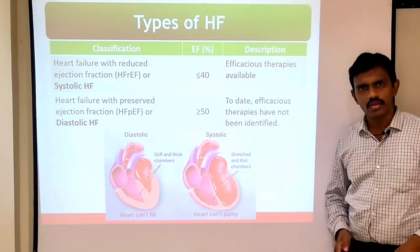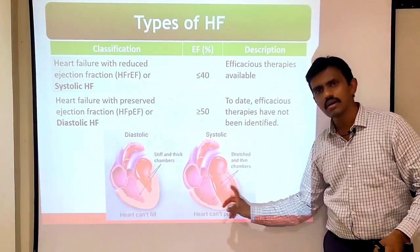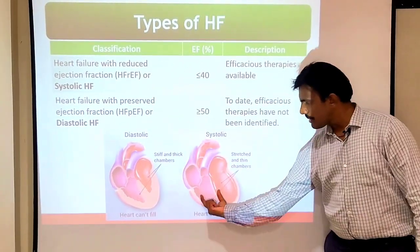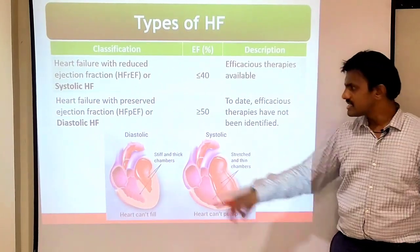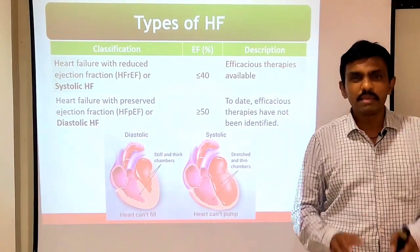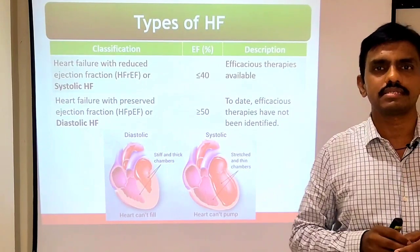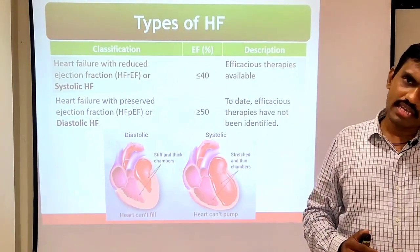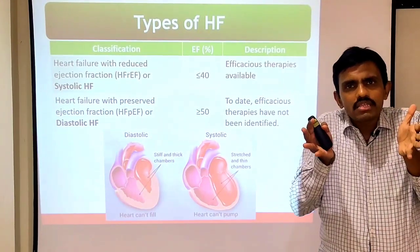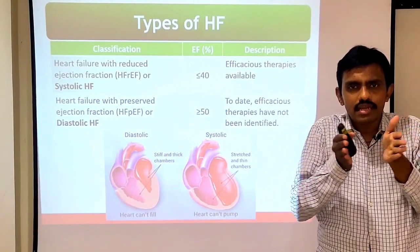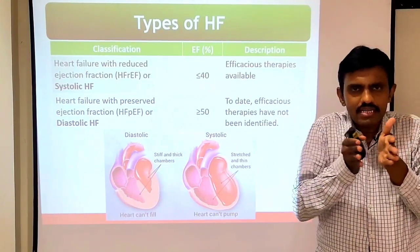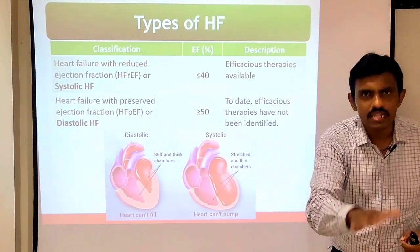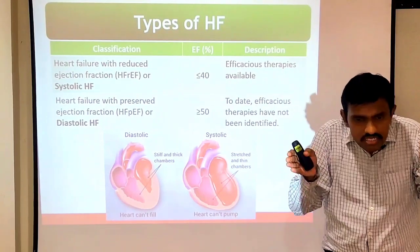In systolic heart failure, the problem is also within the ventricles — the lower chambers of the heart. But instead of becoming thick, the chambers become very stretched and thin; they become weak. This weakness can happen because of many reasons: uncontrolled high blood pressure or a previous cardiac history. Because of this weakness, the heart pumps slowly and the blood coming out of the heart is definitely reduced. This is systolic heart failure.